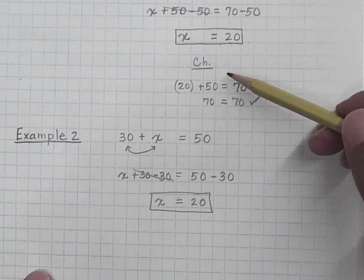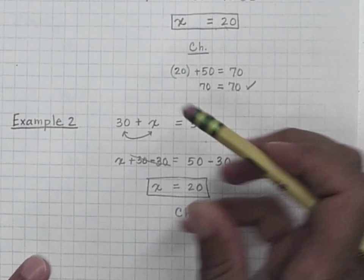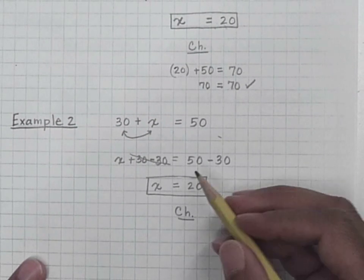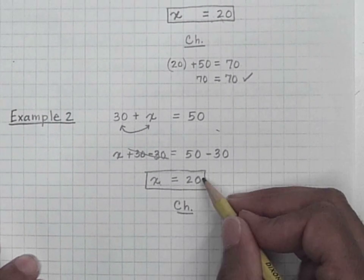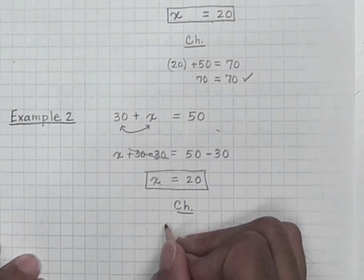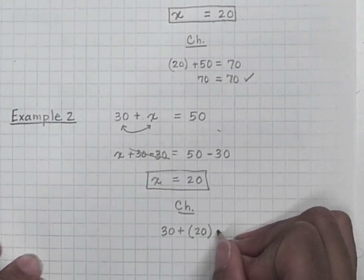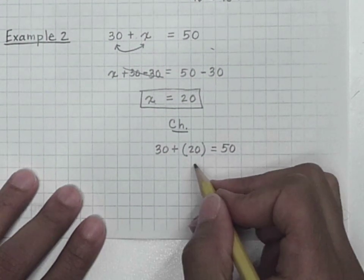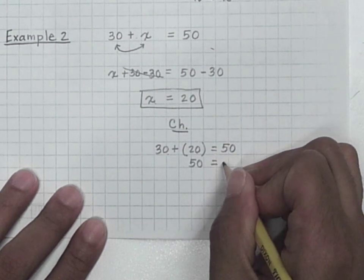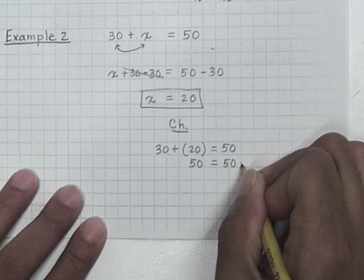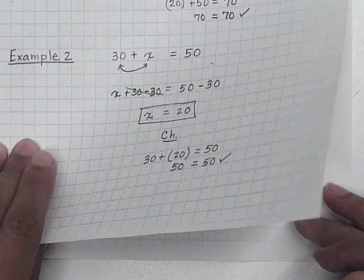It's just a coincidence that both of these are equaling 20 — there isn't a pattern here. Now I'm going to check to see if this value makes the equation true. My goal was to get the variable by itself — it is by itself. I'm going to substitute this back into the original equation. My check becomes 30 plus 20 equals 50. We have 30 plus 20, which equals 50. Does 50 have the same value as 50? Yes, it does. Therefore, x does indeed equal 20.